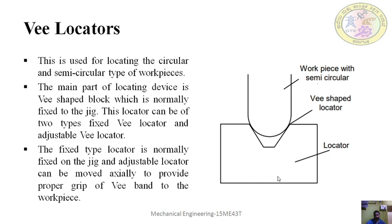The V-locator can be of two types: fixed V-locator and adjustable V-locator. The fixed type is normally fixed on the jig body, while the adjustable locator can be moved up and down to provide the proper grip of the V onto the workpiece.